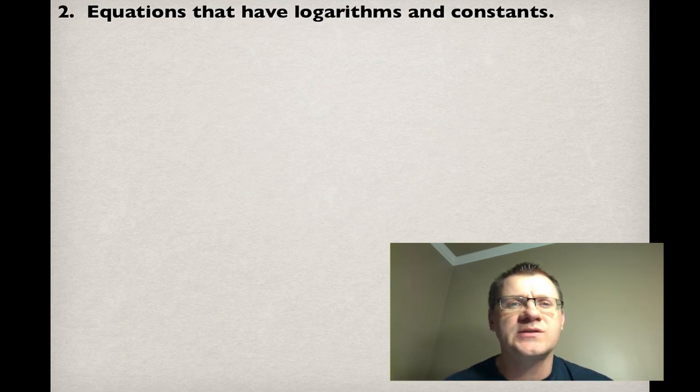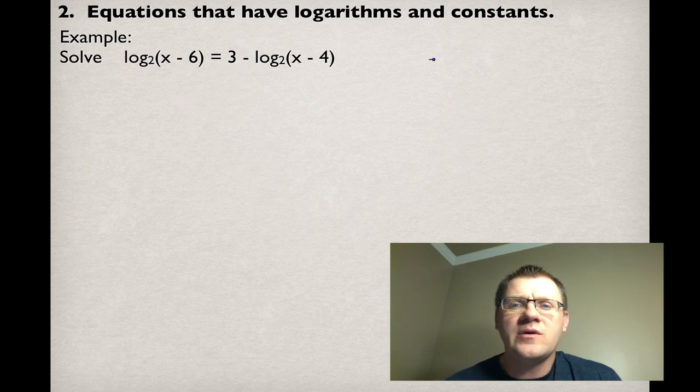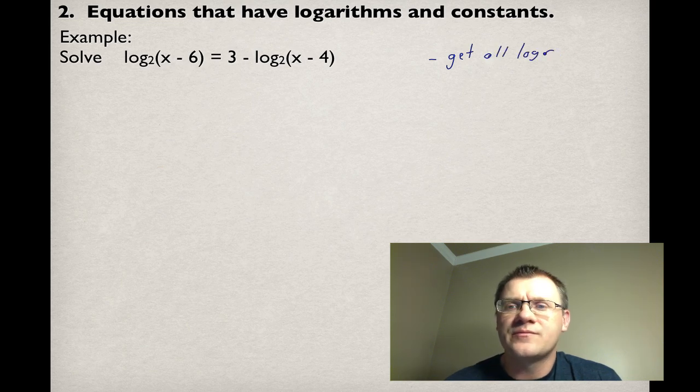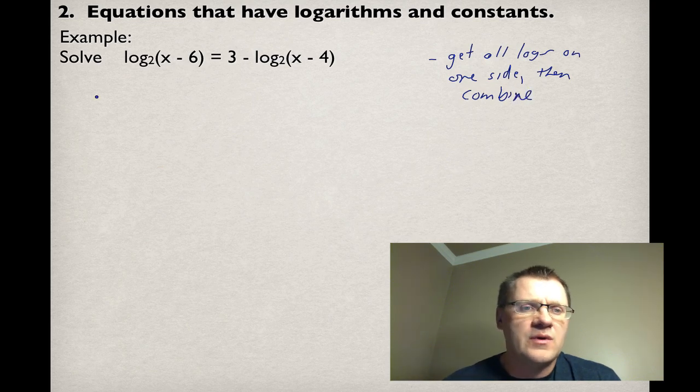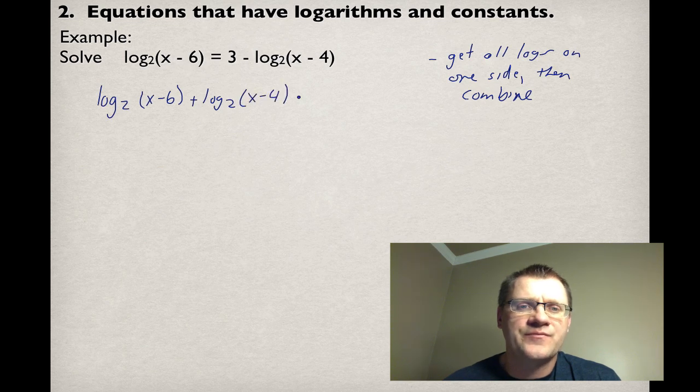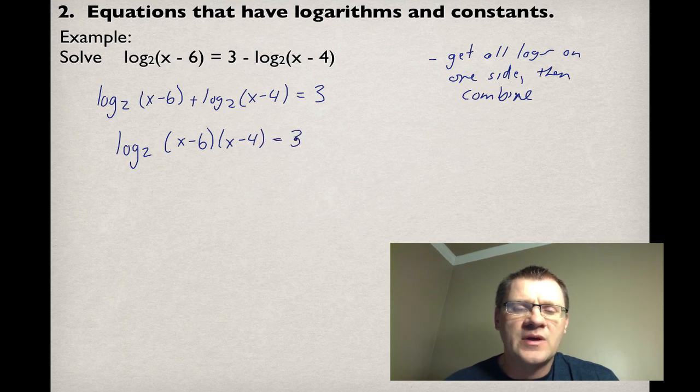Our second type of equation is equations that have logarithms and constants. Our example is log_2(x - 6) = 3 - log_2(x - 4). What you want to do here is get all your logs on one side and then combine them using our log laws. We have log_2(x - 6) and we're going to move this other log over by adding log_2(x - 4). That equals now 3. We actually end up having log_2[(x - 6)(x - 4)] = 3.